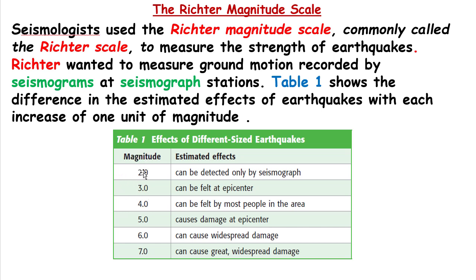For example, magnitude 1 is the first level of the Richter scale. According to the Richter scale, magnitude 2 can be detected only by a seismograph. As I told you before, every day at least 3,000 earthquakes happen, and most of them we cannot feel. But the seismograph can measure them. So at magnitude 2, a seismograph can measure it, but a human being cannot feel it. This is on the first level of the scale.